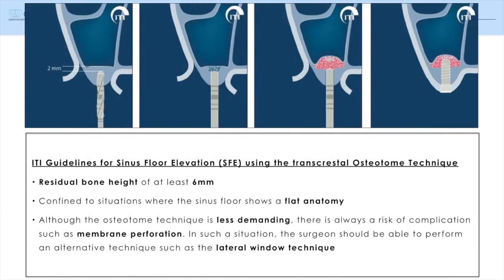The sinus floor elevation with the osteotome technique, using a transcrestal approach, requires from my point of view a bone height of at least six millimeters and a flat anatomy of the sinus floor. This technique is less demanding than the window technique, but it has a certain risk for a perforation of the Schneiderian membrane.